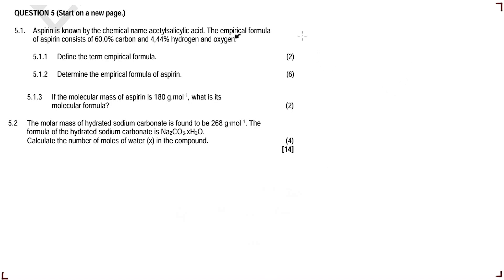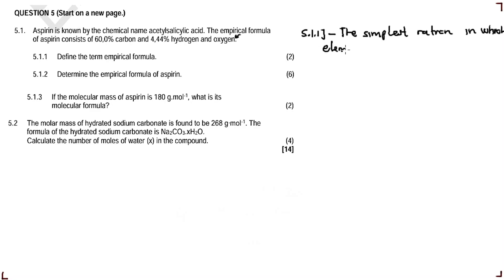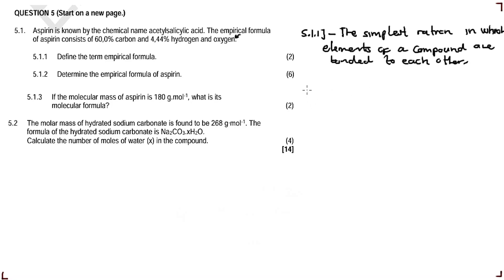In case you need the definition: the empirical formula is the simplest ratio in which the elements of a compound are bonded to each other. That's the definition for empirical formula.